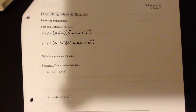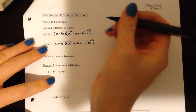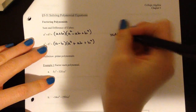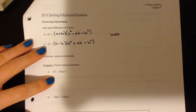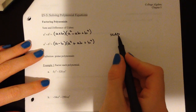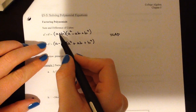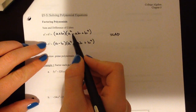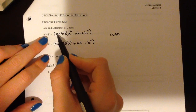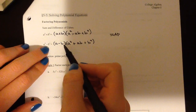One quick thing that will help you remember these is the mnemonic device SOAP. It stands for Same, Opposite, Always Positive, and it will help you remember the signs. So the first sign is the same as the original, the second is the opposite, and the last is always positive.